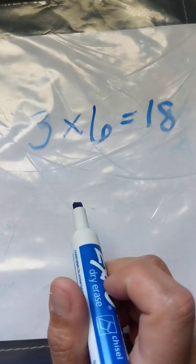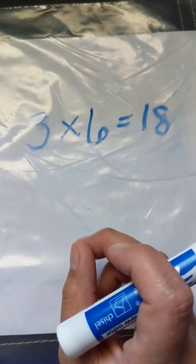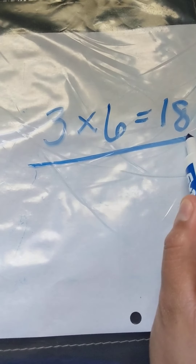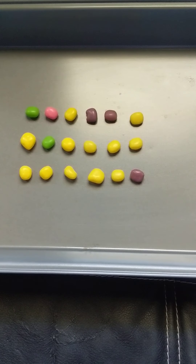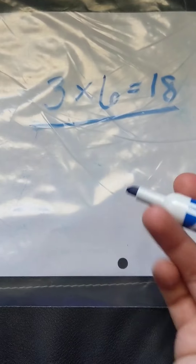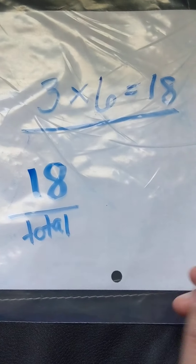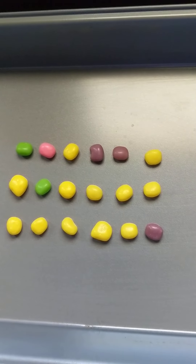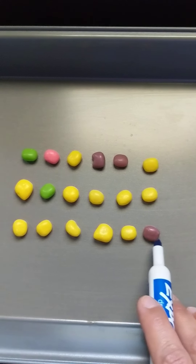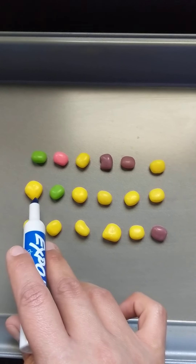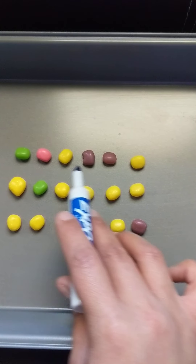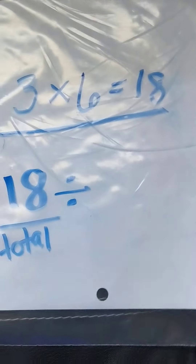Now when we were younger and earlier this year, if you were with me, you practiced fact families. So I'm going to take this equation that I created using this array and I'm going to make it into a division problem. In division, my total number is always first, so I know my 18 is going to be my total so that goes first. Then I'm going to divide it — I took 18 pieces and divided it into groups. This row here is a group, this row here is another group, and this row here is another group, so I'm dividing by three, which is my number of rows.